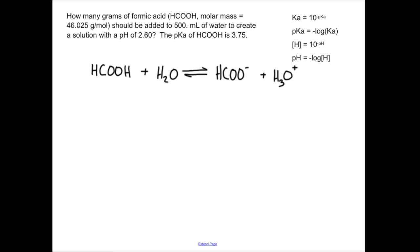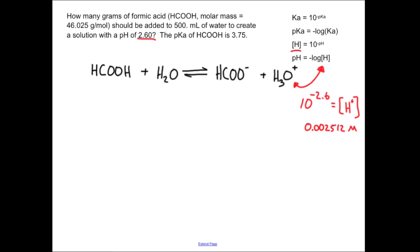When the system is at equilibrium, the concentration of H⁺ is sitting right there in the pH value. To find the concentration of H⁺, we compute 10 to the minus pH: 10^(−2.60), which equals 0.002512 M.